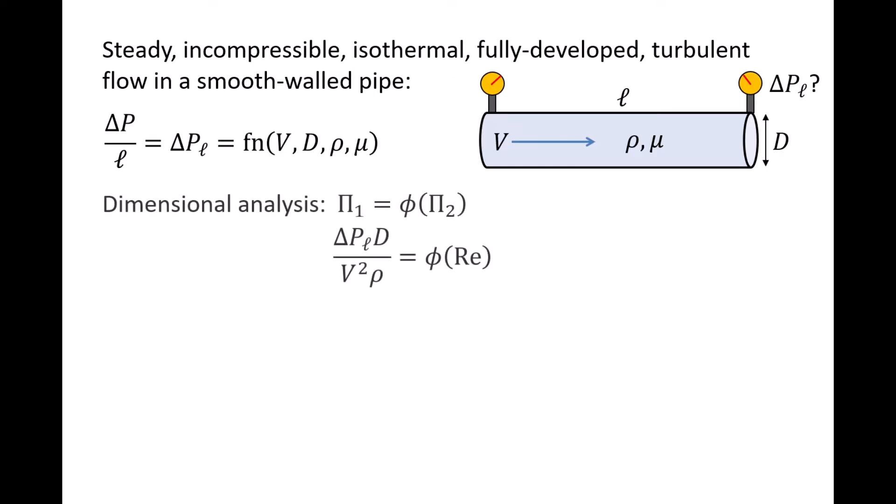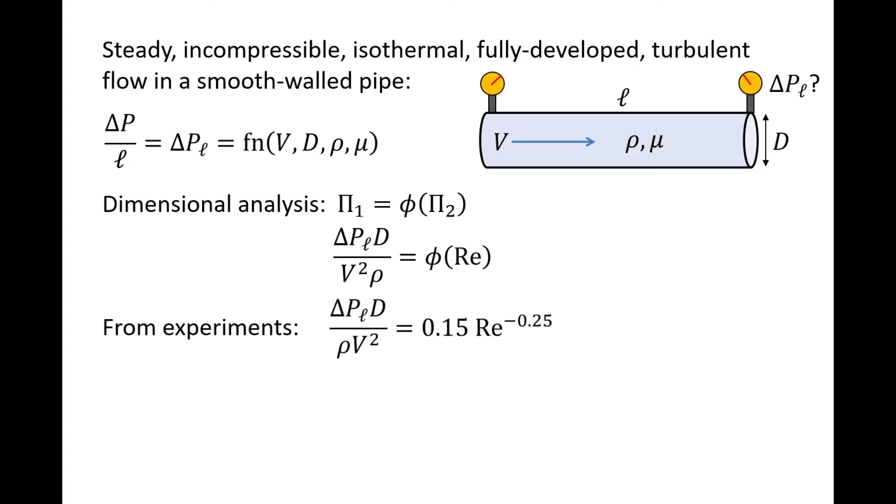Using dimensional analysis, we found that two pi groups are required. The pi 1 group is delta PL times d over V squared rho, and this is some function phi of the Reynolds number. We also discussed how to conduct an experiment where we vary the Reynolds number by varying the flow speed, measuring the pressure drop over a test section of pipe, and then performing a curve fit on the data that gave us phi equals 0.15 times the Reynolds number to the negative 0.25. Finally, we can solve for delta PL, which equals 0.15 rho V squared over d times the Reynolds number to the negative 0.25 power.